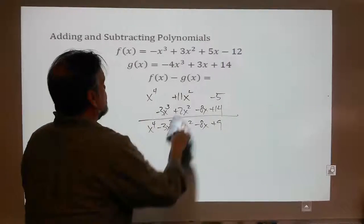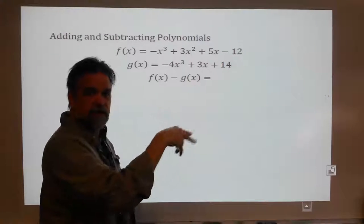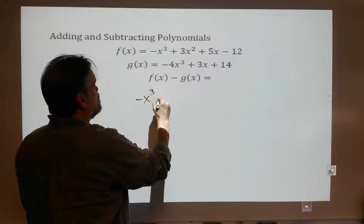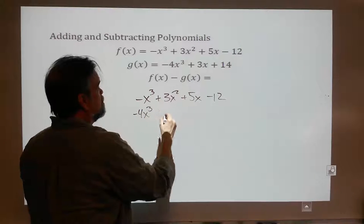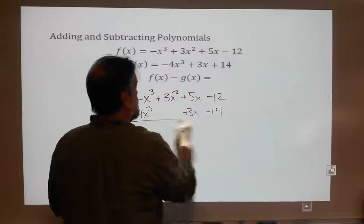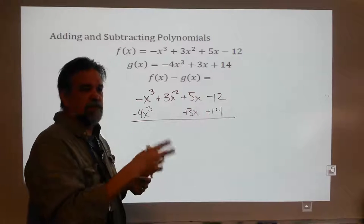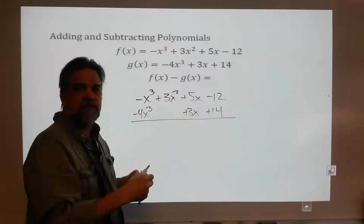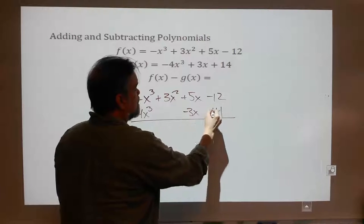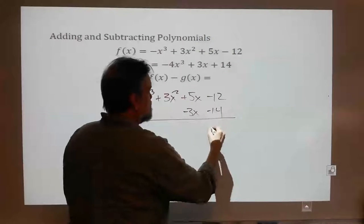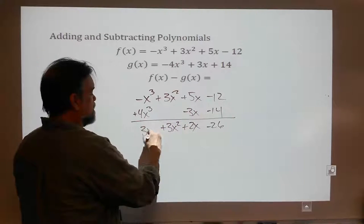Now this time we are subtracting. Subtraction is just like addition — only you change the sign of the things that you're subtracting. I'm going to take negative x cubed plus 3x squared plus 5x minus 12, and subtract from it negative 4x cubed plus 3x plus 14. I'm going to change all the signs and then add — just like 5 minus 2 is just like 5 plus negative 2. So I get plus 4x cubed minus 3x minus 14. And now: negative 26, plus 2x, plus 3x squared, plus 3x cubed. That's my answer.